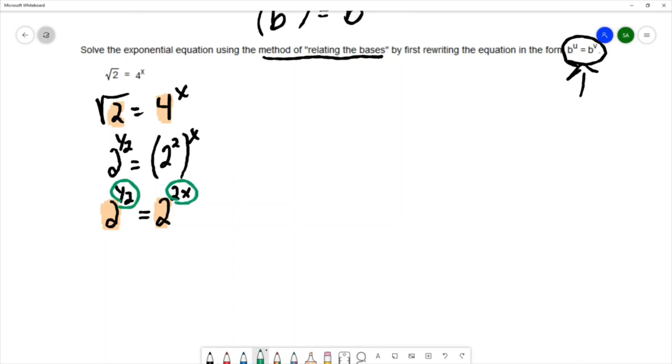that when you have an equation where the bases are equal to each other, then the exponents must be equal to each other. So I'm able to simplify this equation to say that one half is equal to 2x.